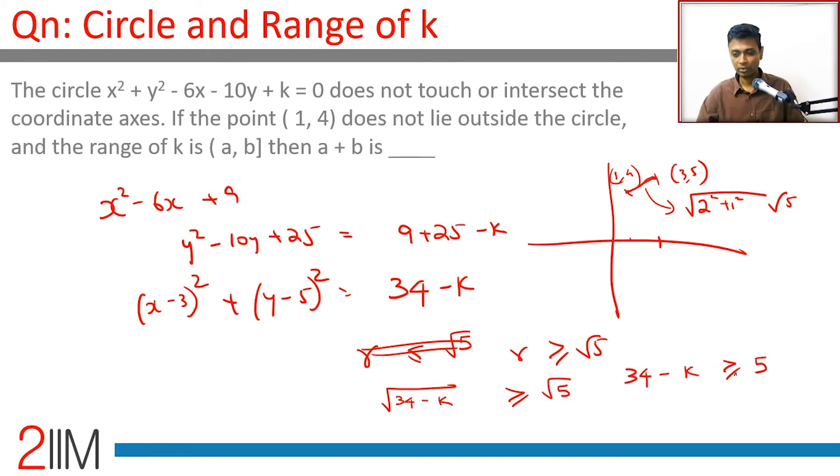k is less than or equal to 29. The largest value of k is 29. So we have found b. We still got to find a.